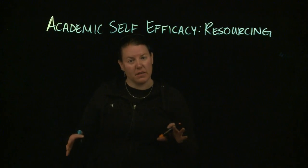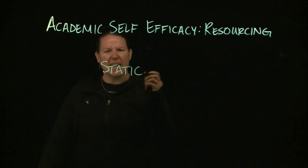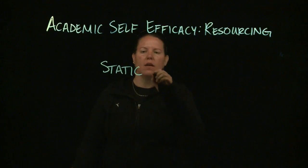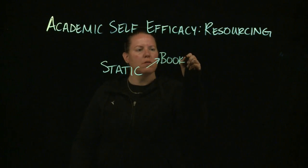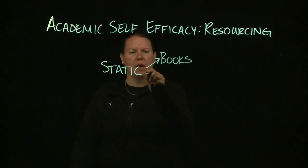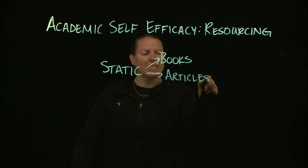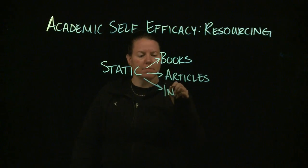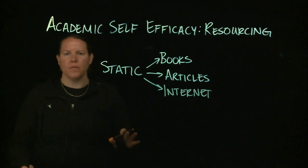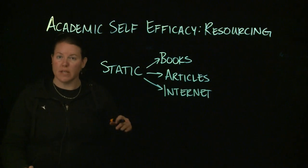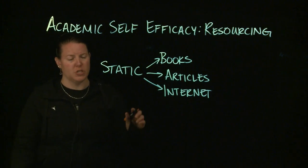Sometimes they are static resources, and static resources mean things like books — your textbook or other books that might be helpful. You have articles, journal articles if you're in a higher level class. You have the internet — resources that are out there available to you that don't tend to change that much, unless you're talking about the internet where a lot of things change sometimes.